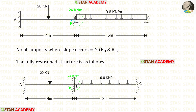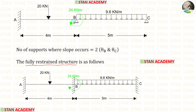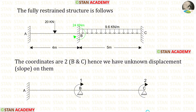In this beam, at points B and C there are hinged supports, so the number of supports where slope occurs is 2. At point B we have theta B and at point C we have theta C. Now let us make the fully restrained structure by removing the hinged supports at B and C and replacing them with fixed supports.